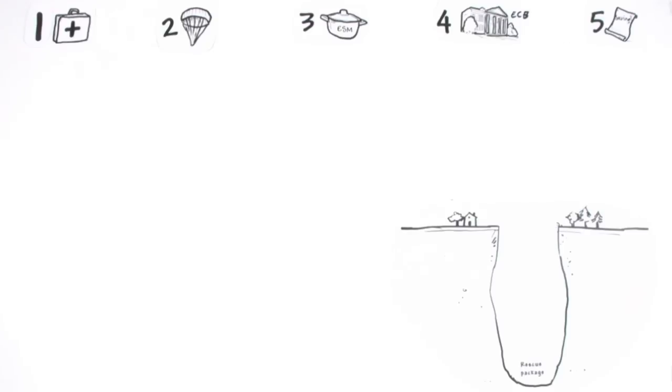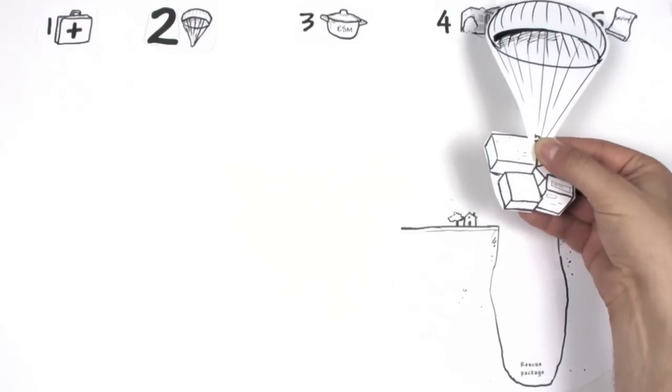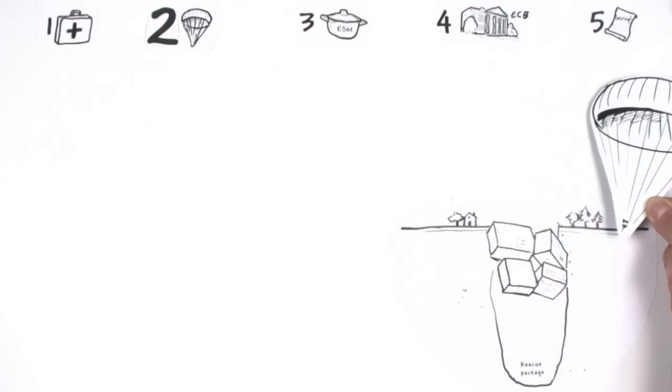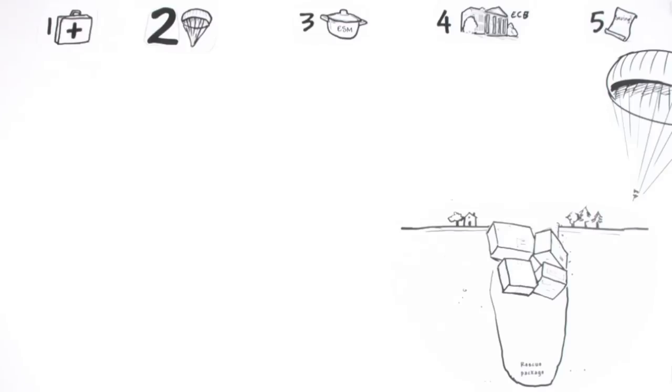A so-called parachute amounting to about seven times the size of the rescue package was created. Not only for the Greeks, but also for other countries who are showing signs of financial weakness. The money making up this parachute, just like the money used to create the bailout package, will have to be paid back.